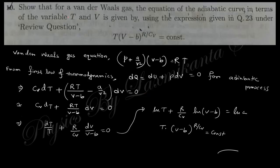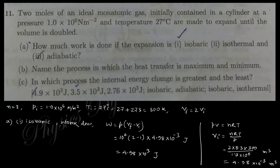For a van der Waals gas, derive the equation of the adiabatic curve in terms of T and V. Using the first law with dQ = 0 for an adiabatic process: Cv·dT + P·dV = 0. Writing P = RT/(V - b) - a/V², and neglecting a/V² since volume is large, the equation simplifies to dT/T + (R/Cv)·dV/(V - b) = 0. Integrating gives the adiabatic relation.